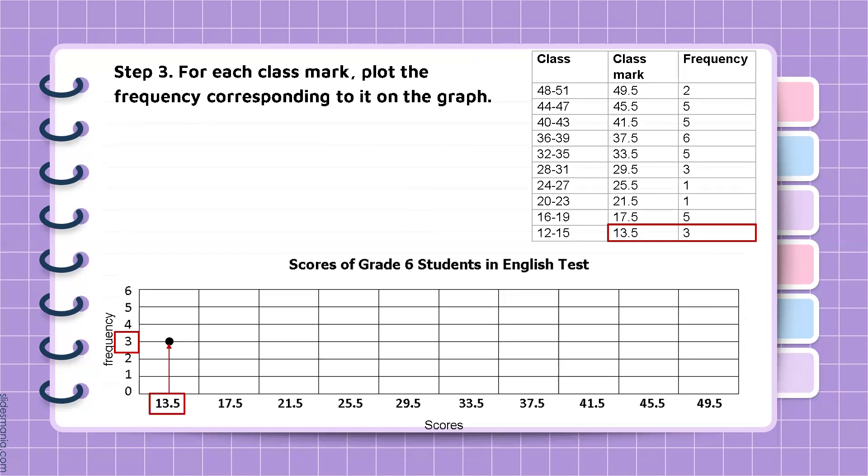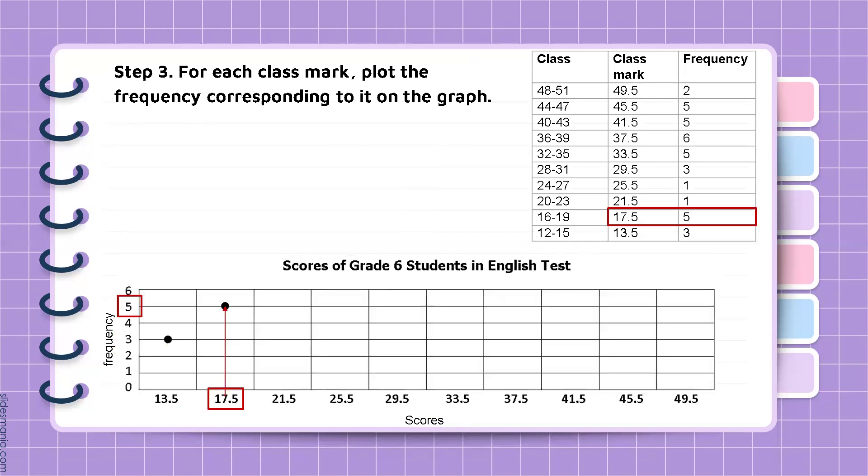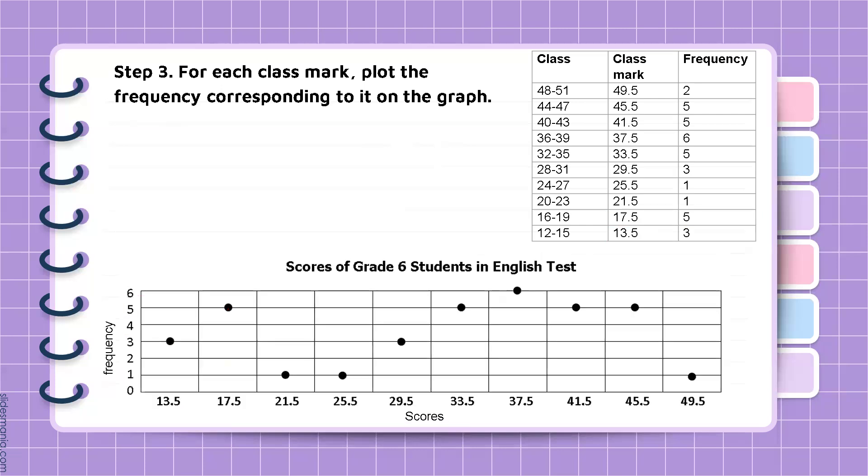Step 3, for each class mark, plot the frequency corresponding to it on the graph. So we have the class mark, the lowest class mark, which is 13.5. And we have 3 for the frequency. So we plot there the dot. Then for the second class mark, which is 17.5, and there are 5 frequencies for this class mark. Then we do the rest with the class intervals or class mark.